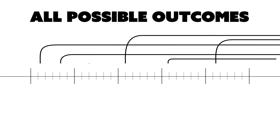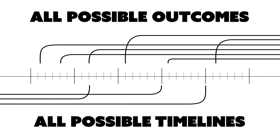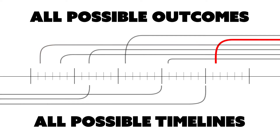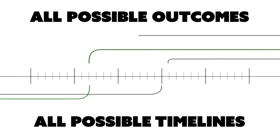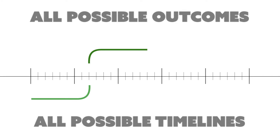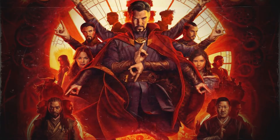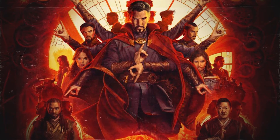Dr. Strange is a Marvel Comics character who, while wielding a powerful mystical artifact called the Time Stone, is capable of seeing all possible outcomes along all possible timelines. In examining every potential conclusion, he can strategically choose a path or action from those with the highest probability of success. When Dr. Strange runs projections of real-life outcomes, he is modeling and using that model to plan for futures he might not otherwise see.